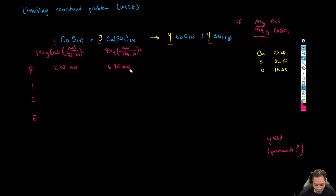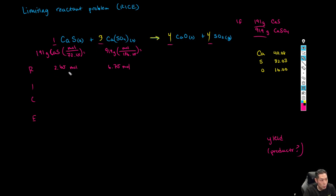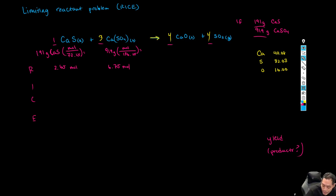Now we want to find out which is the limiting reagent. We have a 1-to-3 ratio, meaning for every one mole of CaS we need three moles of CaSO₄. If we have 2.65 moles of CaS and multiply by three, we need 7.95 moles of CaSO₄ — but we only have 6.75. So CaSO₄ is our limiting reagent.